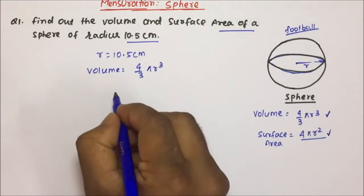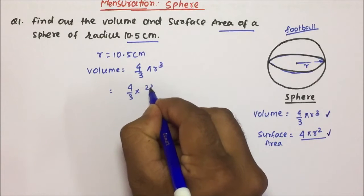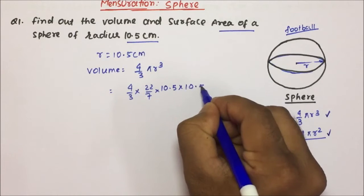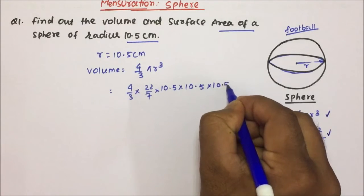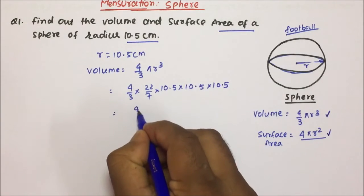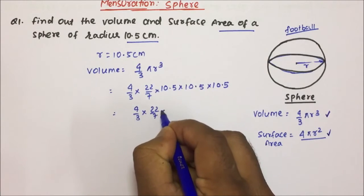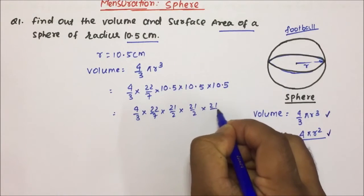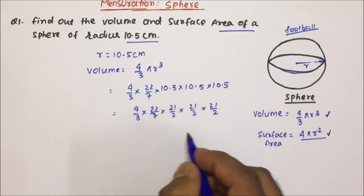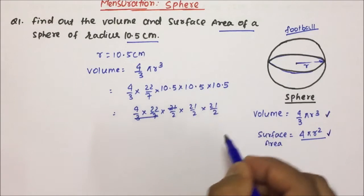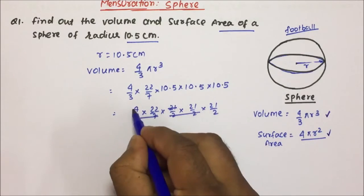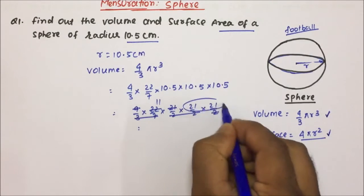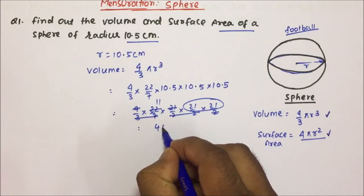So friends, 4 by 3 pi is nothing but 22 by 7, and radius will be nothing but 10.5 into 10.5 into 10.5. You can also write it as 22 by 7 into 21 by 2 into 21 by 2 into 21 by 2, because 10.5 is nothing but 21 by 2. So 7 and 3 in 21 — you can cancel it. 2 and 2 give 4, you can cancel it, and 2 and 11 you can cancel it. So 21 into 21 — 21 square will be 441.